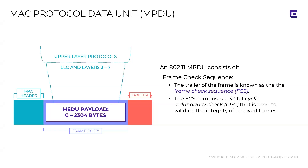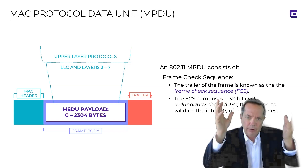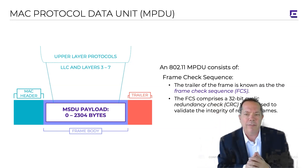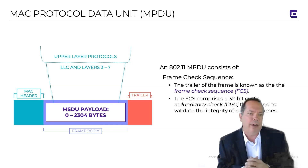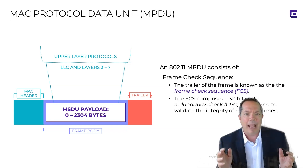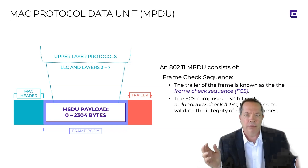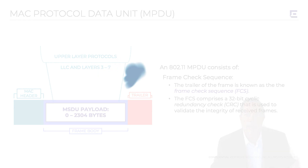We'll be talking about all these components more, but remember those two terms. A MAC service data unit is the upper layer payload, layers three through seven, that is effectively the body in an 802.11 data frame. A MAC protocol data unit is an 802.11 data frame.